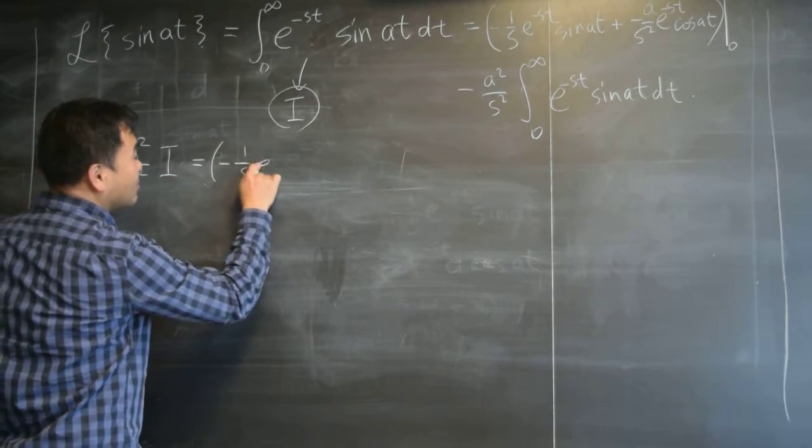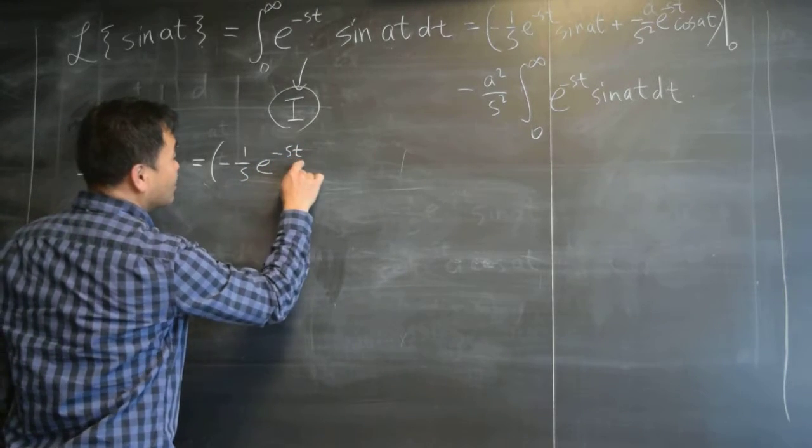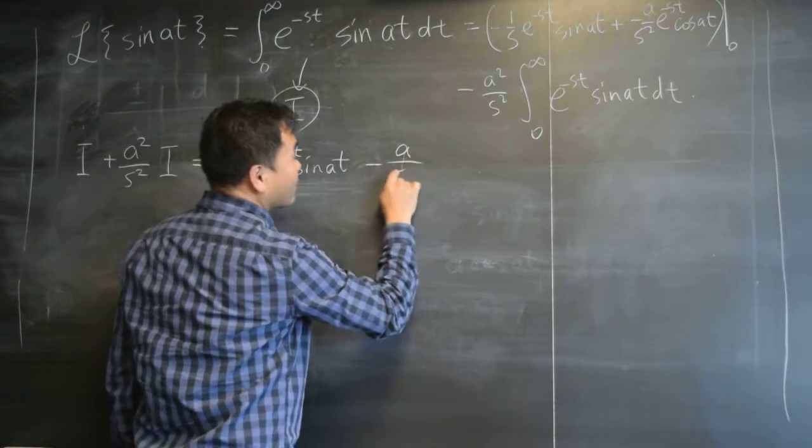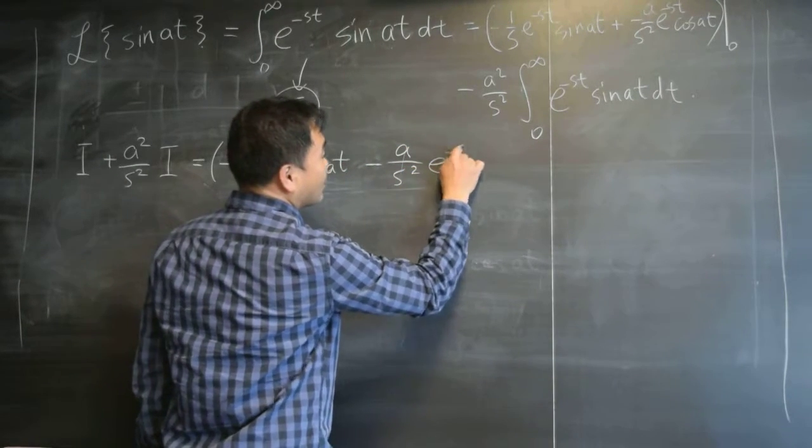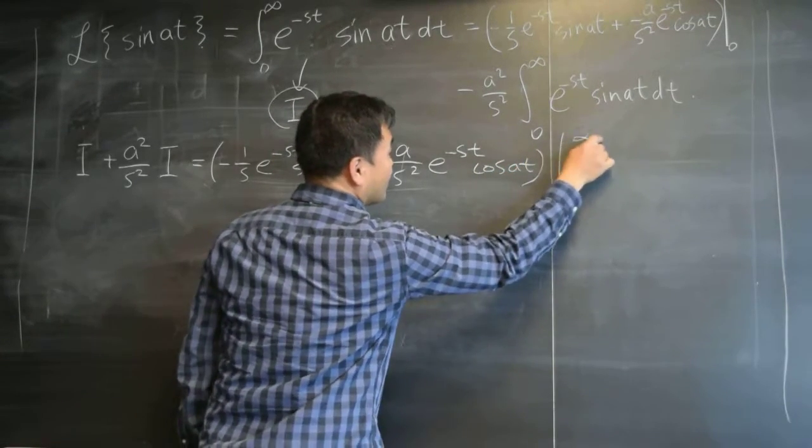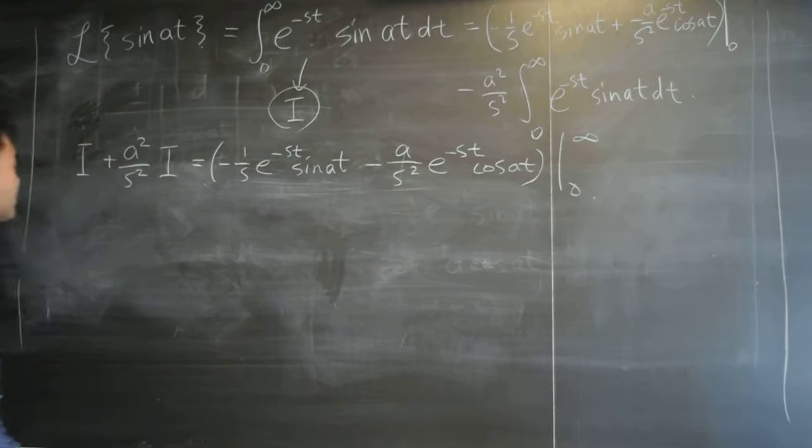Whereas on the right side, we have this thing. Negative one over s e to the negative st sine at. I'll just copy everything down. And it's minus a over s squared e to the negative st cosine at. And you're plugging it into.